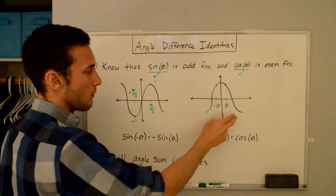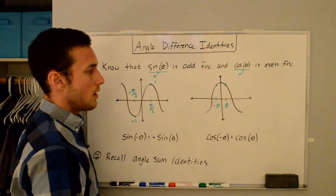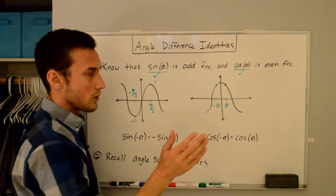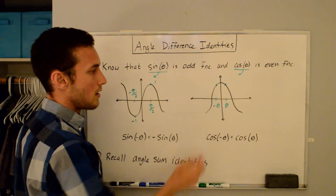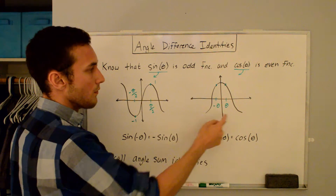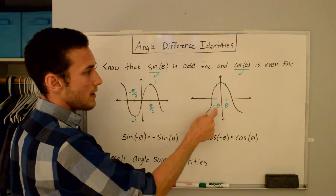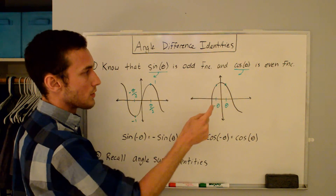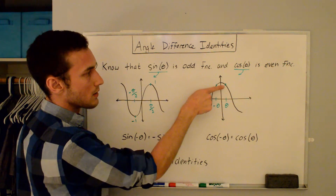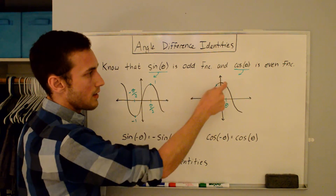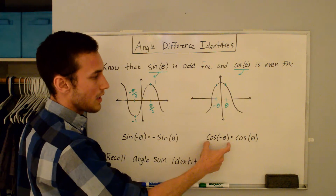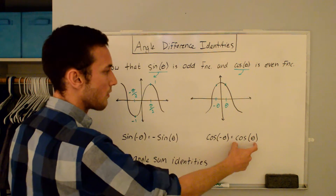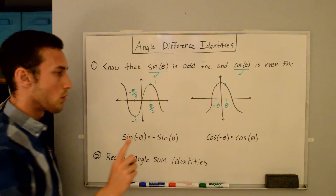For cosine, looking at this plot, I've drawn an arbitrary angle theta and negative theta. You can see that the cosine of negative theta and the cosine of theta are the same value. So cosine of negative theta is equal to cosine of theta.